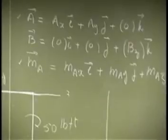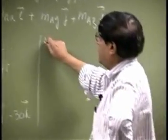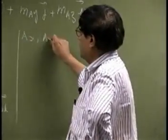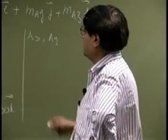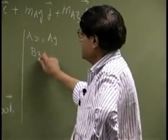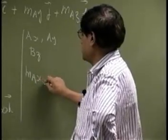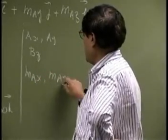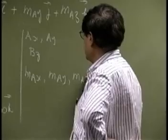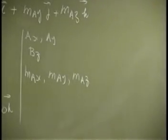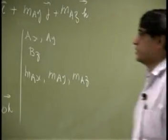And if you do a count on the unknowns, you have AX, AY, that's two unknown components. You have BZ. And then you have MAX, MAY, and MAZ. Those are another three unknown components.